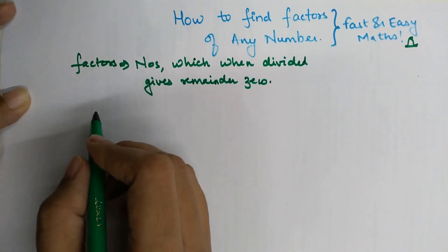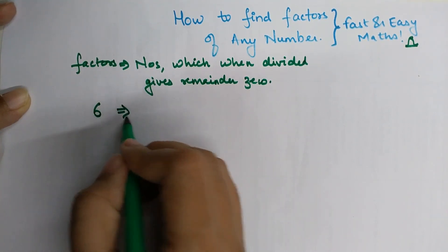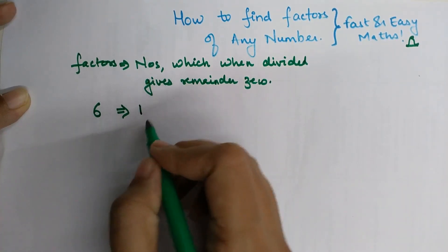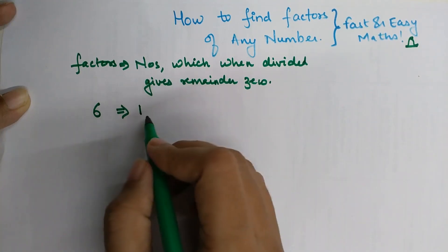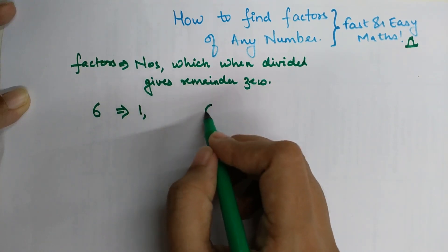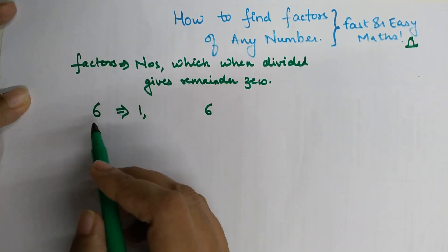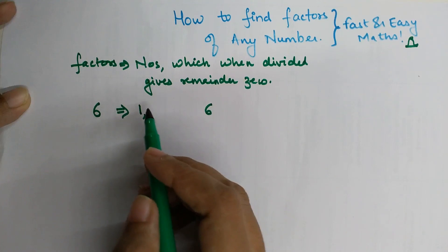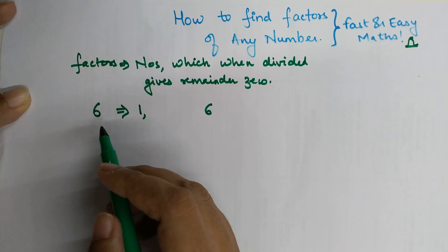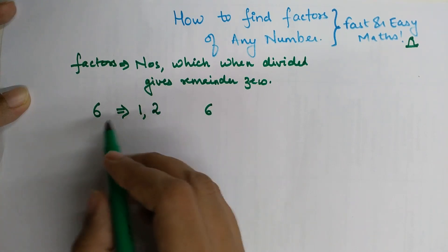Let's take the example of finding the factors of number 6. The first number which will divide 6 is always 1, because 1 divides all numbers. The number also always divides itself, so 6 is also a factor. Now, does 2 completely divide number 6? Yes — 2 threes are 6 — so 2 is one of the factors of number 6.